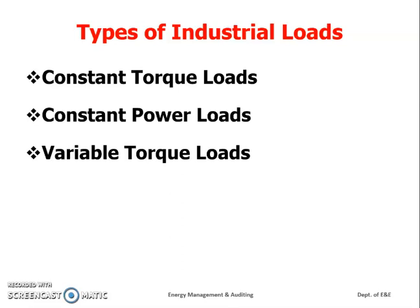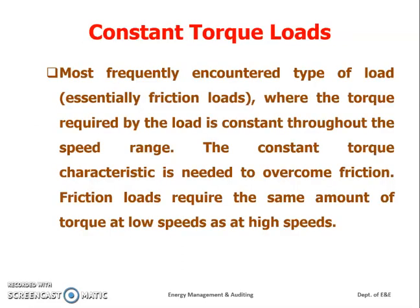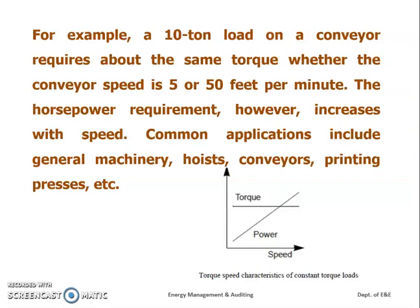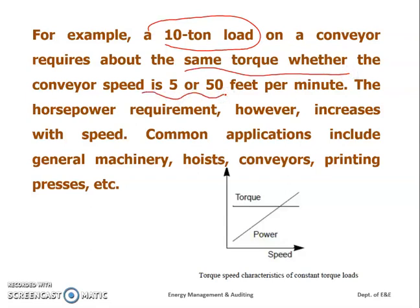First we will discuss constant torque loads. Constant torque loads are the loads where the torque required by the load is constant throughout the speed range. Whatever the speed, the torque has to remain constant. For example, a 10-ton load on a conveyor belt requires the same amount of torque whether the conveyor speed is 5 or 50 feet per minute.